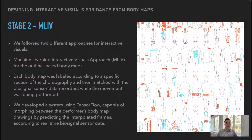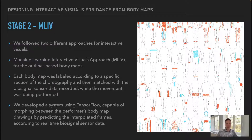Stage 2, MLIV. We followed two different approaches for interactive visuals. The Machine Learning Interactive Visuals approach, MLIV, was used for the outline-based body maps. Each body map was labelled according to a specific section of the choreography and then matched with the biosignal sensor data recorded while the movement was being performed. We developed a system using TensorFlow, capable of morphing between the performer's body map drawings by predicting the interpolated frames according to real-time biosignal sensor data.